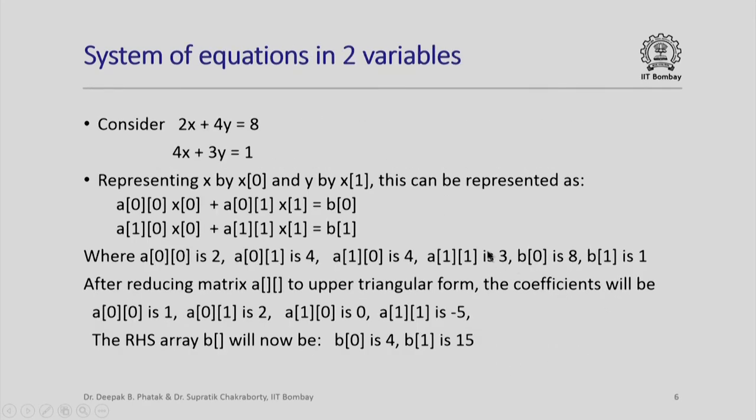Just as a demo, a system of equations in two variables which we had 2x plus 4y equal to 8 and 4x plus 3y equal to 1, we can represent x by x[0] and y by x[1]. Then we have a 2 by 2 matrix representing these coefficients where the coefficient values will be 2, 4, a[1][0] is 4, a[1][1] is 3 representing the second row or second equation. Right hand side b[0] is 8, b[1] is 1.